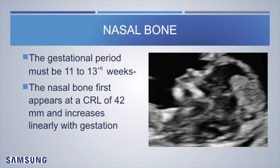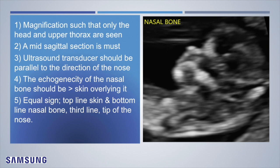The nasal bone assessment is also performed between 11 to 13 weeks 6 days. The nasal bone first appears at a CRL of around 42 mm and increases linearly with gestation. Good magnification is required with only the head and upper thorax in view; a midsagittal section is a must. The transducer should be parallel to the direction of the nose — if the fetal face is in slight flexion and you don't insonate the nasal bone in a parallel fashion, you may get a false impression of the nasal bone being present or absent. The echogenicity of the nasal bone must be greater than the echogenicity of the overlying skin.